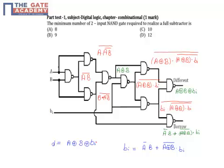Where BI is the borrow input and A and B are my actual inputs. The borrow output is equal to A bar B plus A XOR B whole bar dot BI bar.